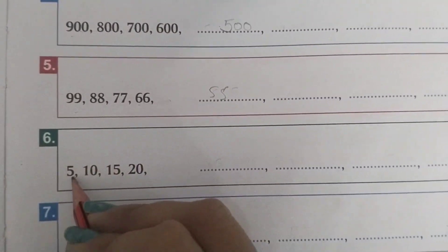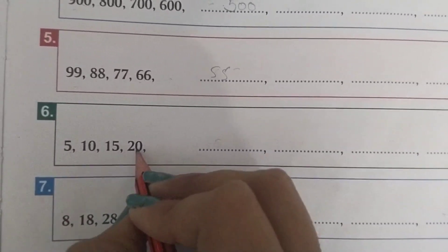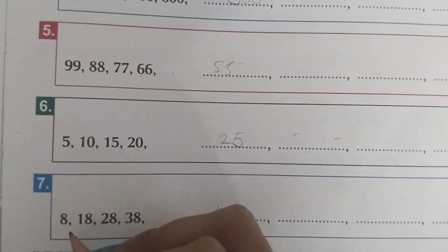5, 10. There is a skip counting. 5, 10, 15, 20, 25, 30, 35, and so on.